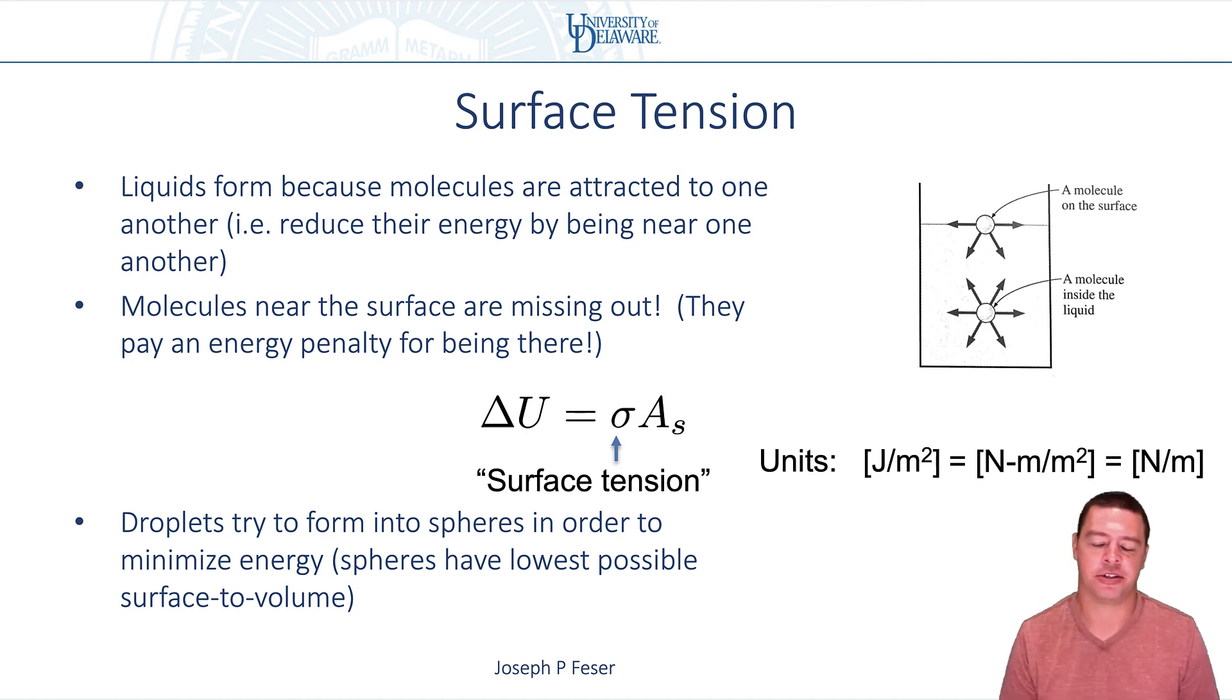Now you might ask yourself, well, why don't all things form into droplets then? Well, it's because in reality there's competing forces. So in addition to minimizing your surface area, you also want to minimize your potential energy. So things are generally drawn downward by gravity, which tends to flatten things out as long as there's enough gravity.